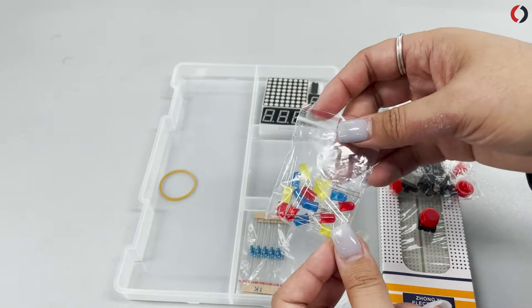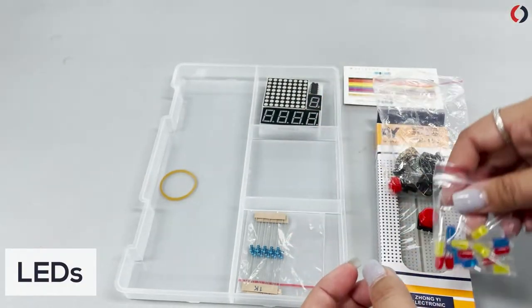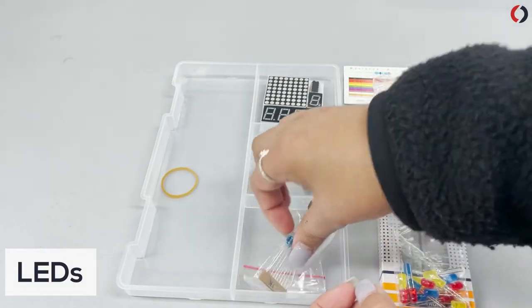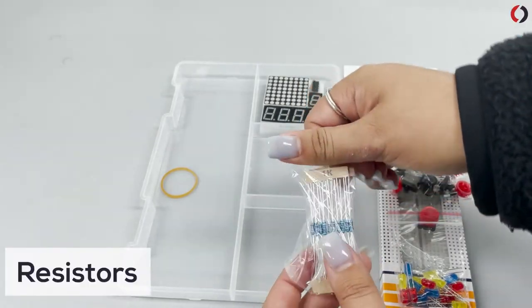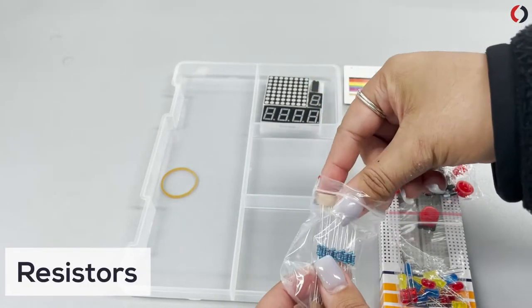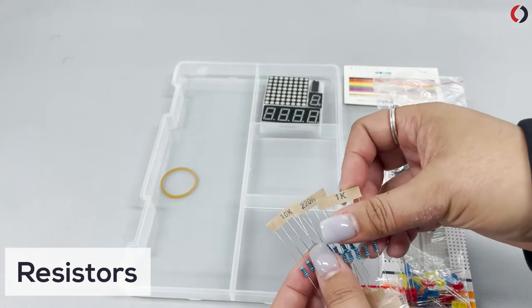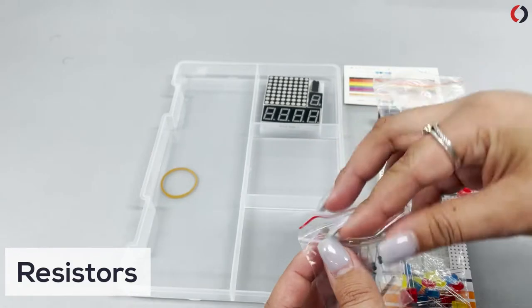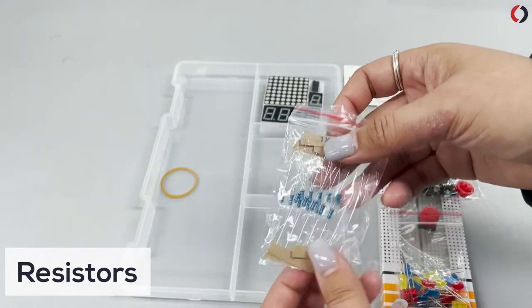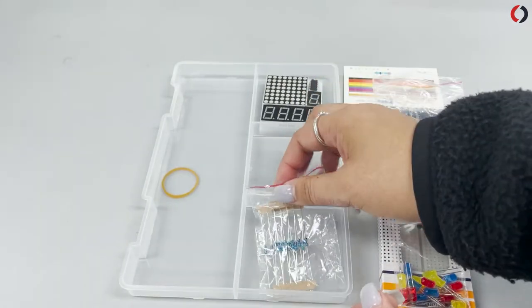Then you have your LED lights in there as well. You have yellow, red, and blue. And then you have your resistors. Let's open them so you can see which ones you have. So you have your 1K, your 220 ohm, and your 10K ohm. So those are in a nice box. Not a box, nice bag.